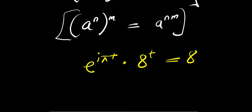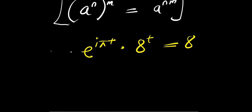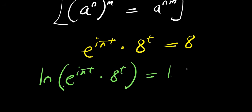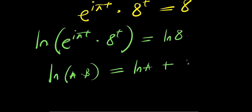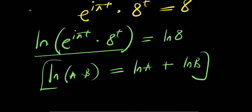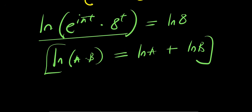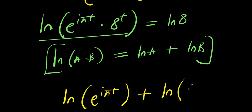That means I have e to the power i times pi times T, multiplied by 8 to the power T, equals 8. The next thing we do is take the natural log. So natural log of e to the power i pi T times 8 to the power T equals natural log of 8. Applying the property ln(A times B) equals ln A plus ln B, I get natural log of e to the power i pi T plus natural log of 8 to the power T equals natural log of 8.